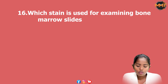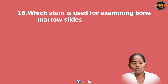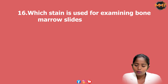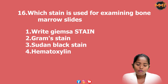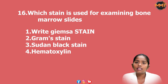Question 15: Which stain is used for examining bone marrow studies? Options: 1. Giemsa stain, 2. Gram stain, 3. Sudan black stain, 4. Haematoxylin stain. The answer is Giemsa stain.